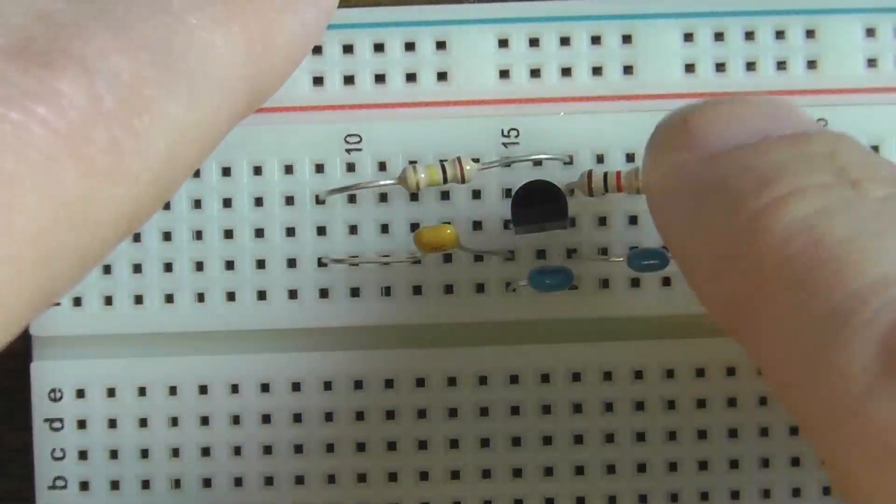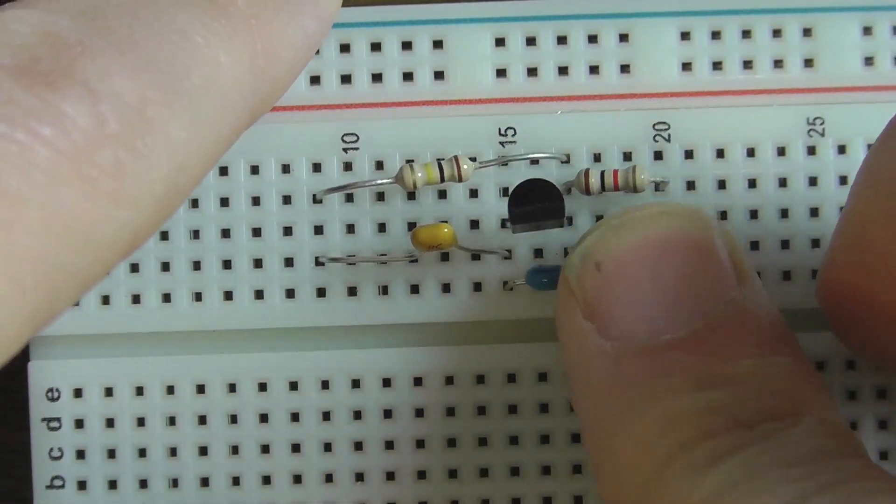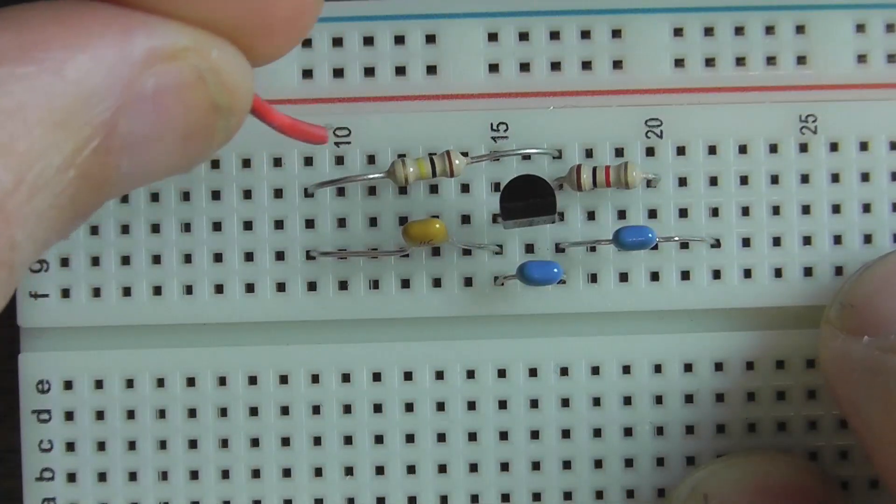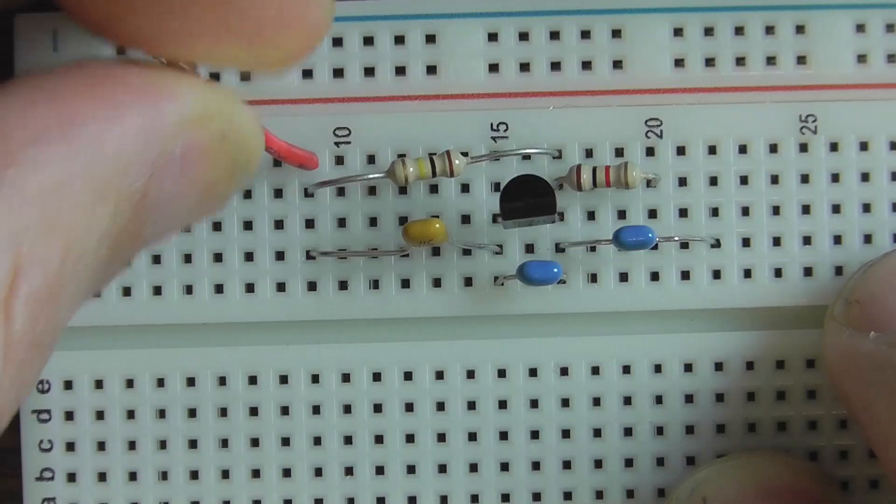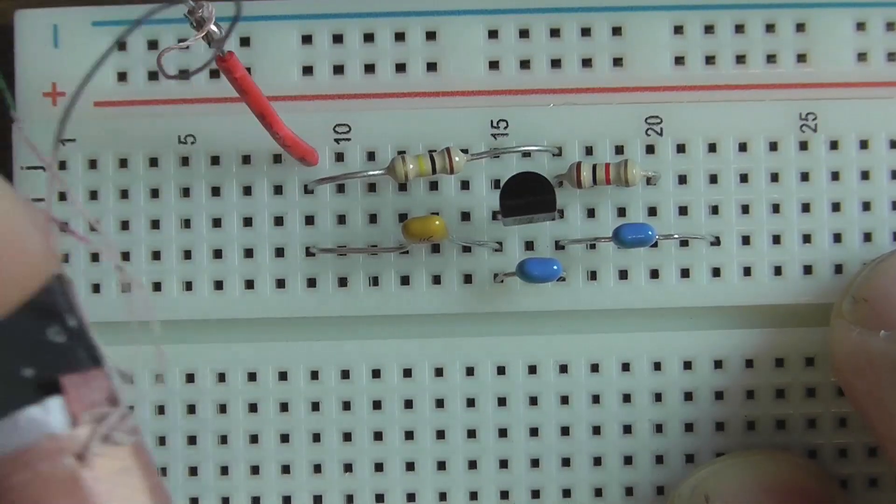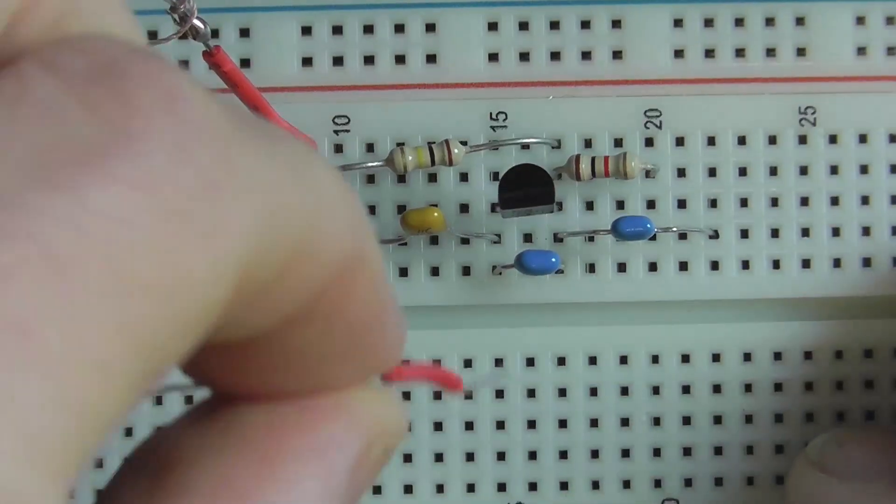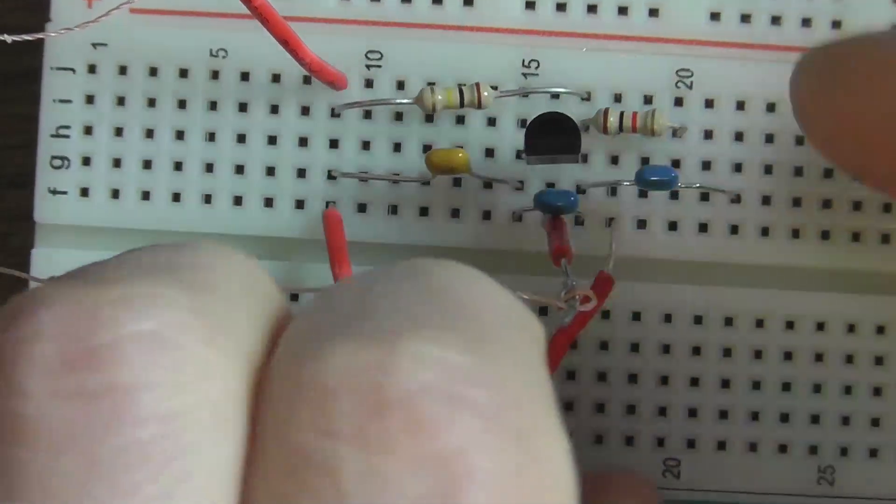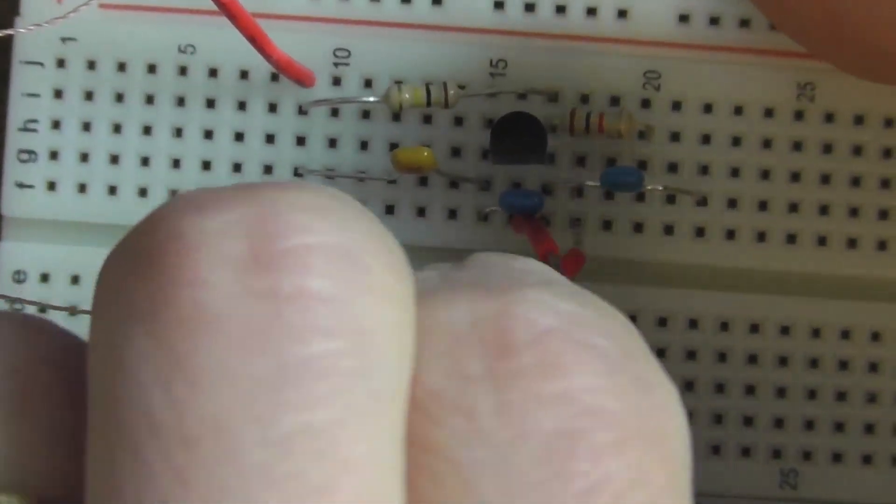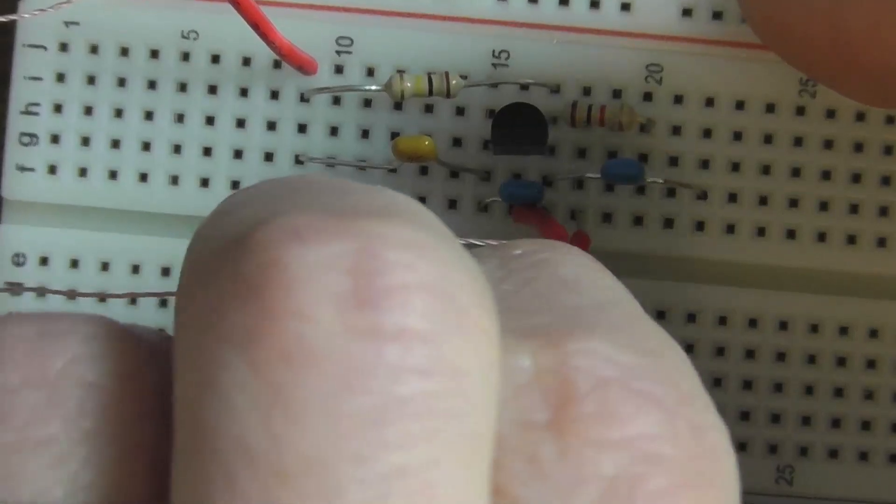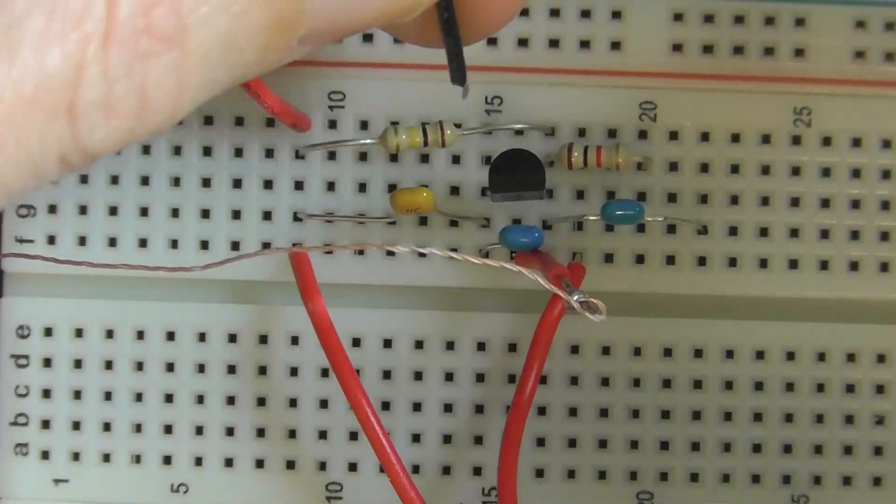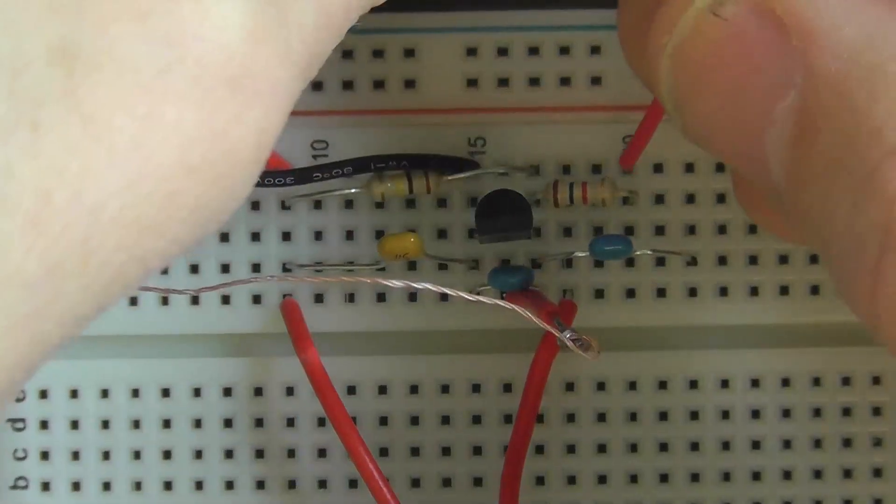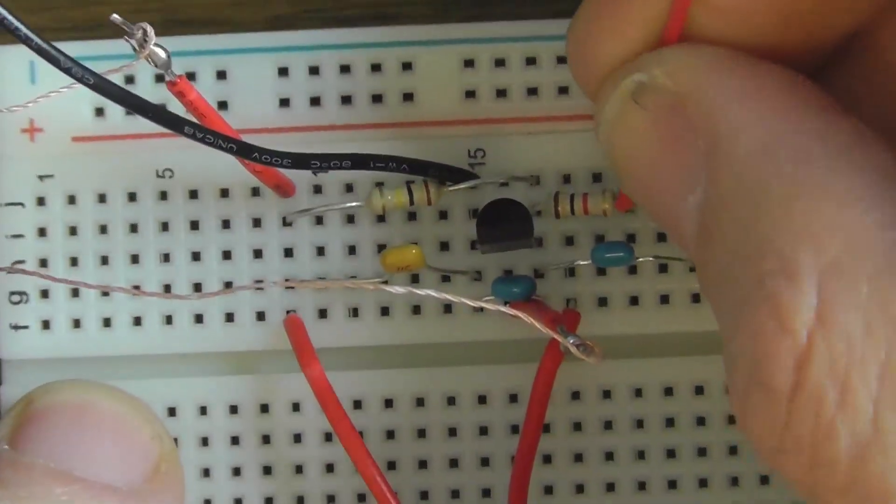And then we're going to place another 0.1 microfarad capacitor in row G in the spot of 17 and 22. Now it's time to add in the antenna coil. We're going to get to the black line, and we're going to insert that into J9, and the white line is going to go into G16. We'll then insert our tuning capacitor, and the center post is going to go in F9, and the rightmost point is going to go into F16. And then we'll add in our black negative battery wire into port J15, and the positive red battery wire into J20.